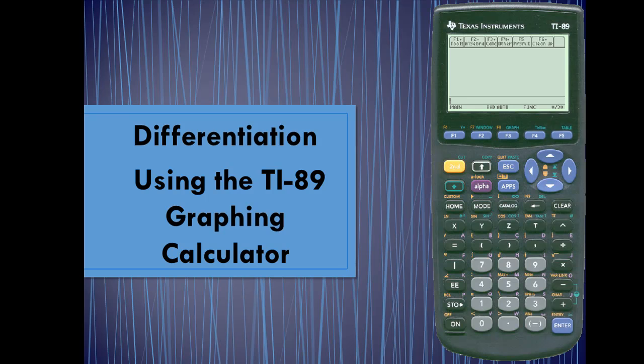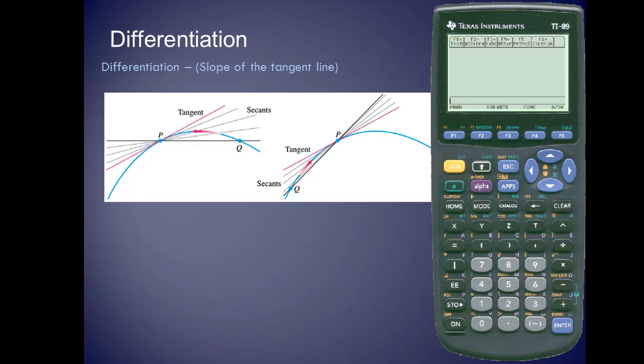Differentiation using the TI-89 graphing calculator. Differentiation is defined as the slope of the tangent line at a point. If you take a look at the two given examples, the blue line is the given curve for both examples, and the red line is the tangent line. If you notice very closely, the red line, which is the tangent line, touches the blue line at exactly one point, thus the definition of a tangent line.